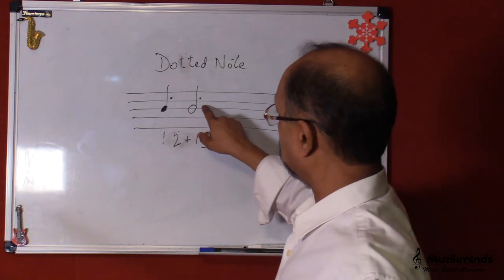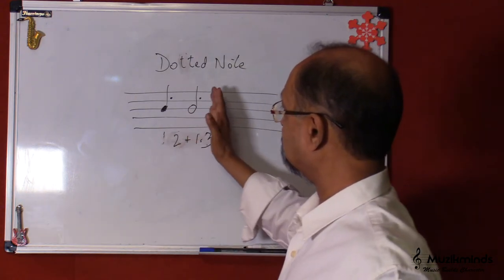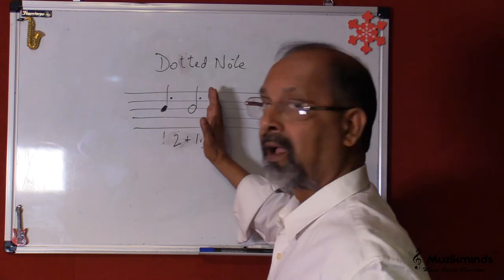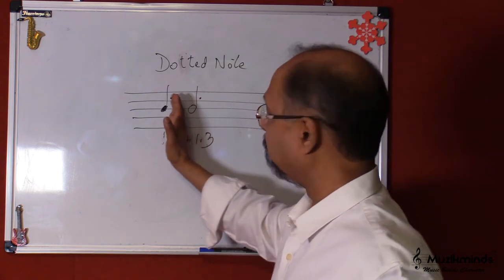So if you see this dot here after the note, it just means that we need to add half the value of the preceding note.